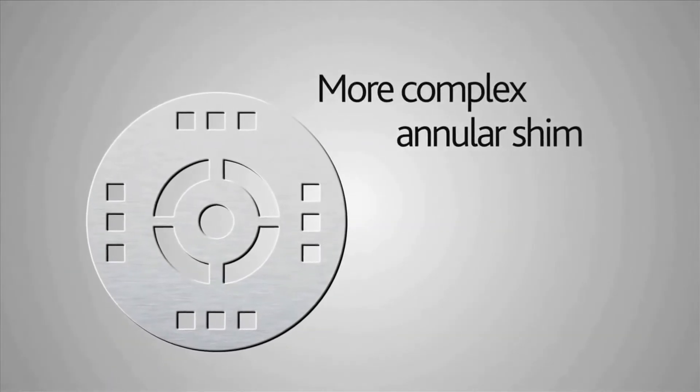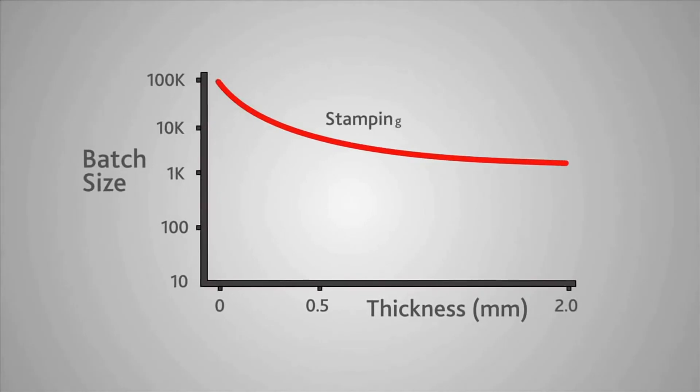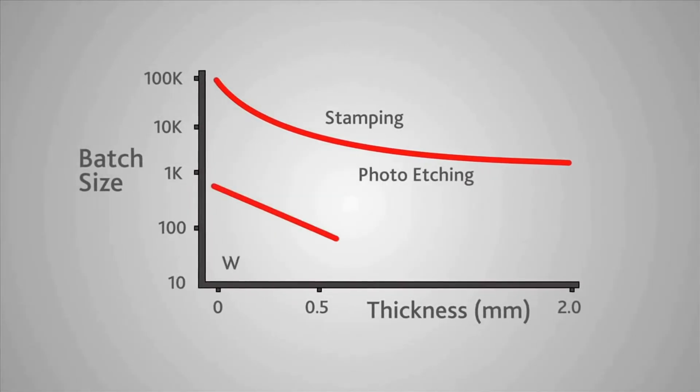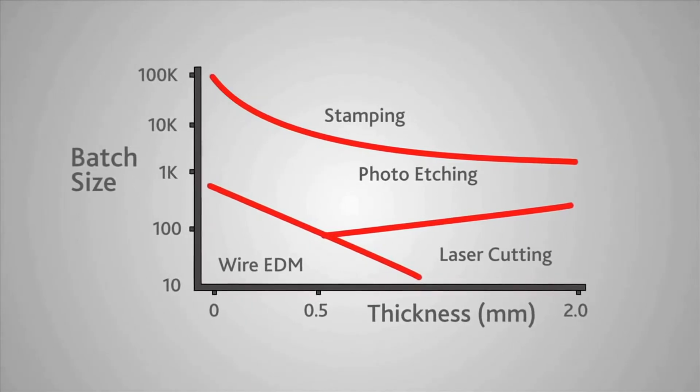Photo etching really excels when you are producing a very complex part. Unlike laser cutting, we etch all the features simultaneously, and so the more complex the components, the more the economics favor photo etching as a method of production.